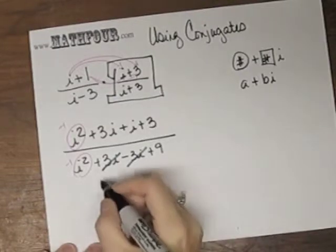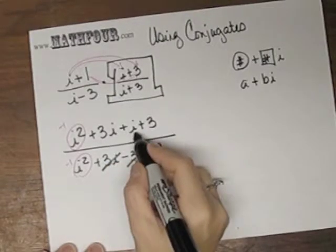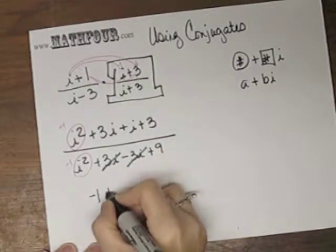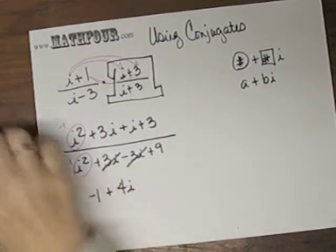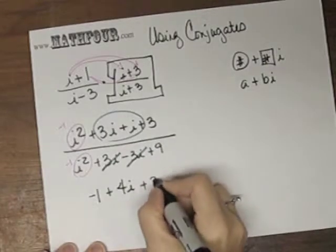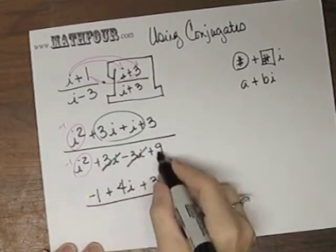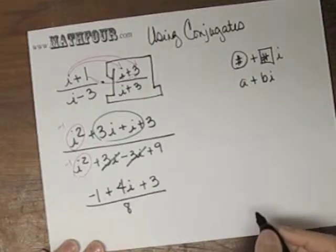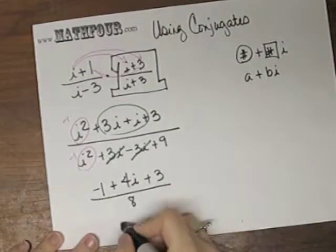And these two bits can go together. So I have negative 1 plus 4i, combining these, plus 3 over, and this is 8 on the bottom. So simplifying a little bit more, I have 4i.